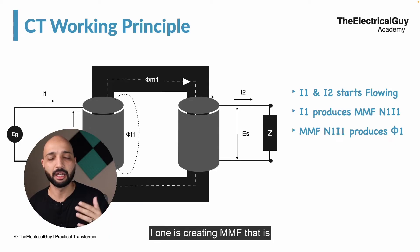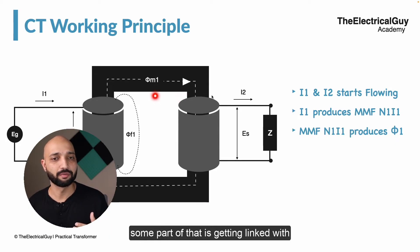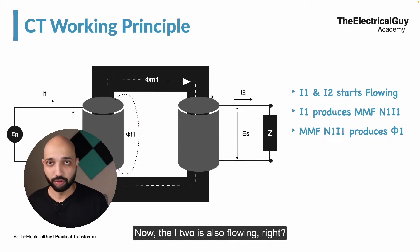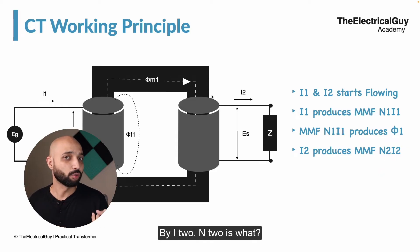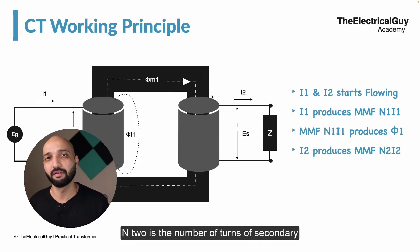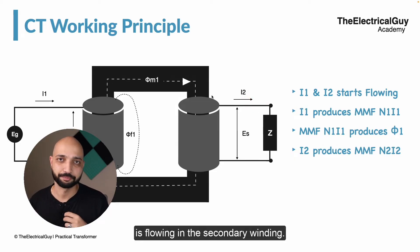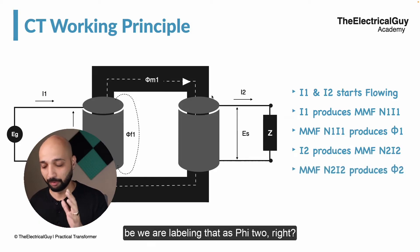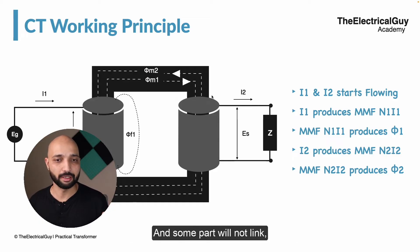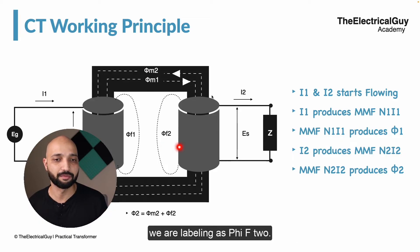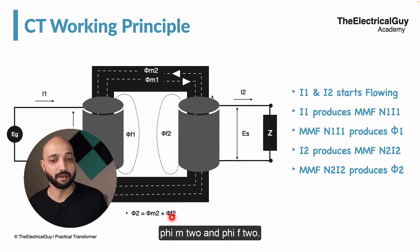I1 is flowing and creating MMF, causing flux phi1. Some part of that is getting linked with the secondary and some part is not. Now I2 is also flowing, so I2 will also produce its own magnetomotive force, which is given by N2 times I2, where N2 is the number of turns of the secondary winding and I2 is the current flowing in the secondary winding. Since there is an MMF, there will be flux — we are labeling that as phi2. Some part of phi2 is getting linked with the primary of the coil, which we are giving by phiM2, and the remaining part will not link — that is the leakage flux, labeled as phiF2. So the total flux phi2 is divided into two portions: phiM2 and phiF2.